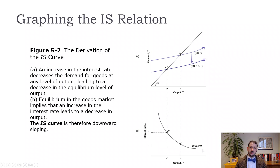The IS curve is simply a downward-sloping curve: output is higher when the interest rate is lower and output is lower when the interest rate is higher. This is important because we'll also graph the LM curve in this same space — with output on the horizontal axis and the interest rate on the vertical axis.